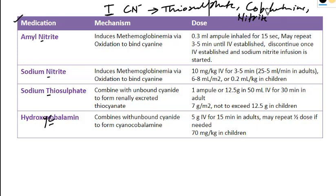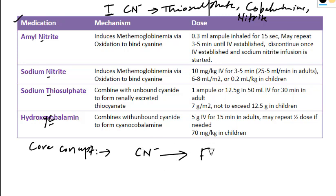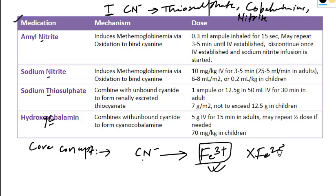Before we talk in detail about those molecules, let us talk about how cyanide causes poisoning. The core concept you need to remember is that cyanide will bind ferric iron — the ferric iron that is part of heme. Cyanide will always bind ferric iron; it does not bind ferrous iron. So cyanide binding ferric iron is a very important concept we will utilize throughout this lecture.